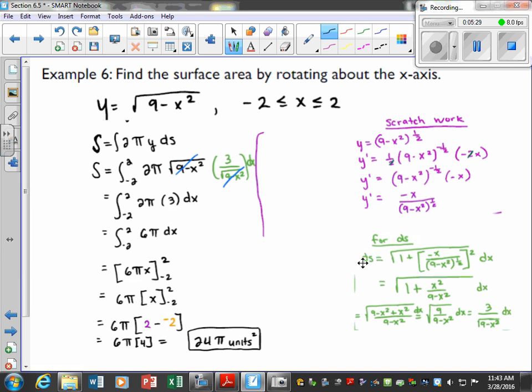Okay, now I plug that first derivative that I got right here into my ds formula, and now I want to square it. Negative x times negative x is positive x². And then a square undoes a square root, so I just have (9-x²) in the bottom.